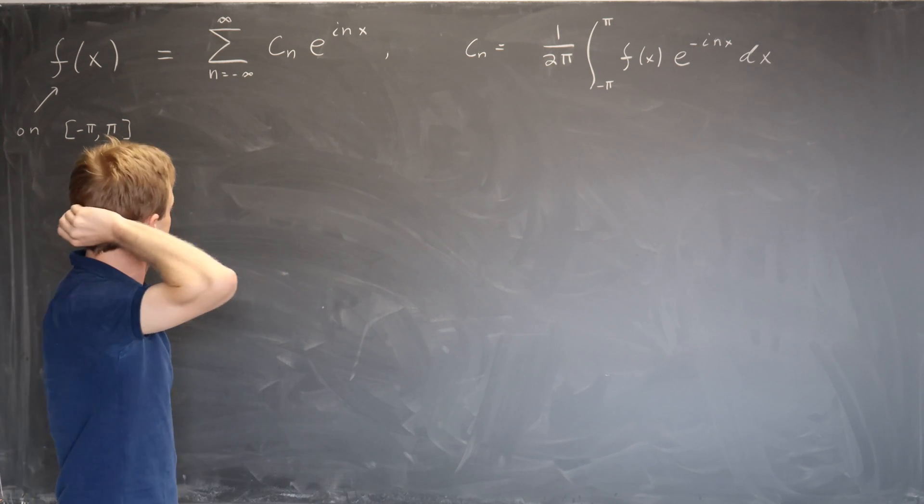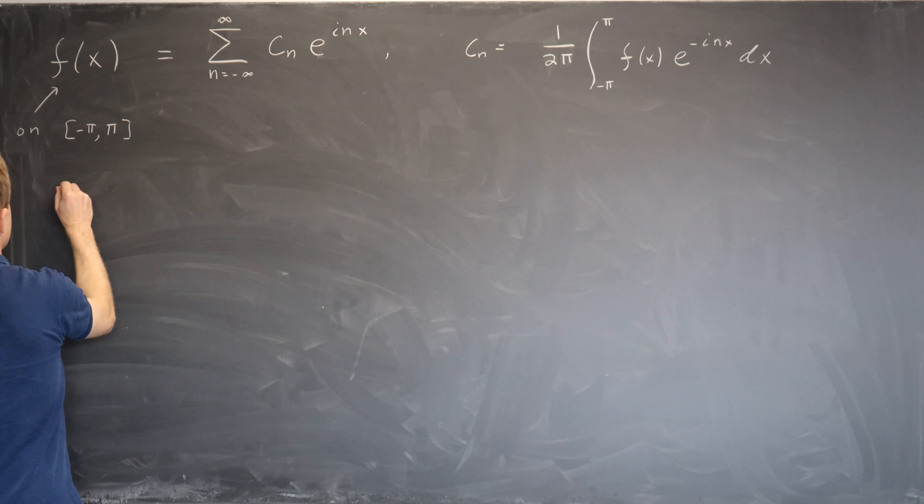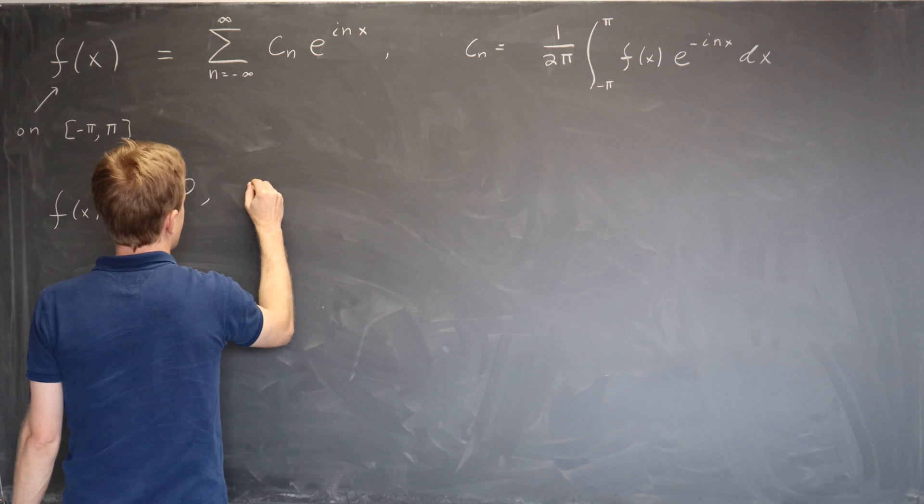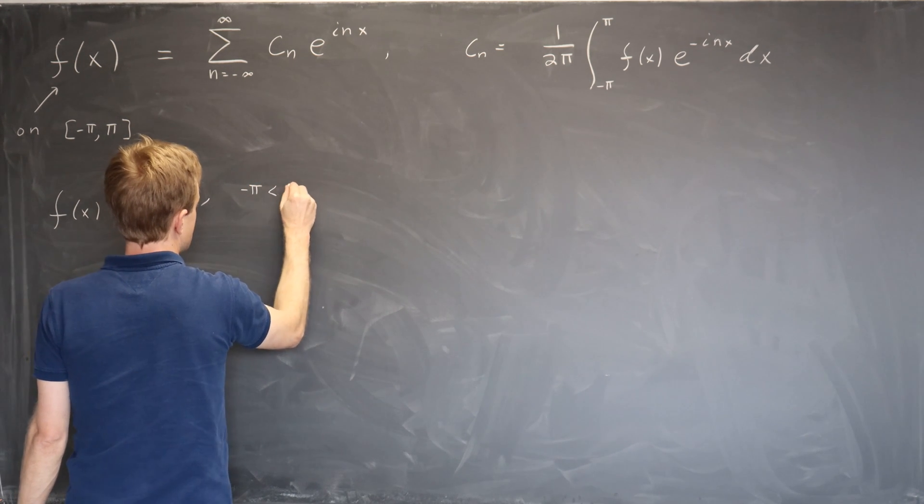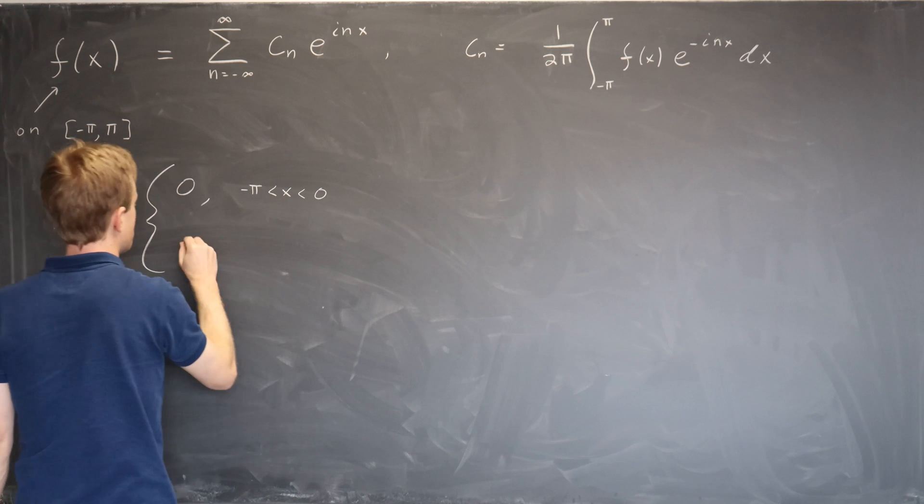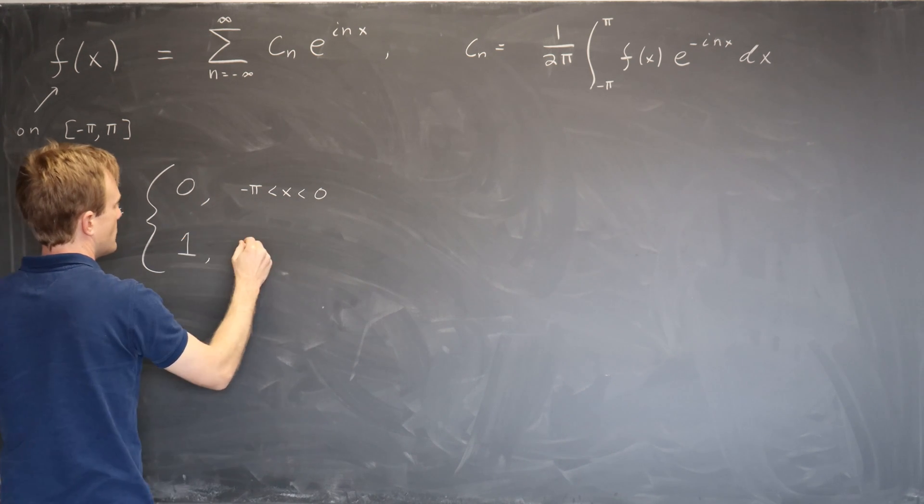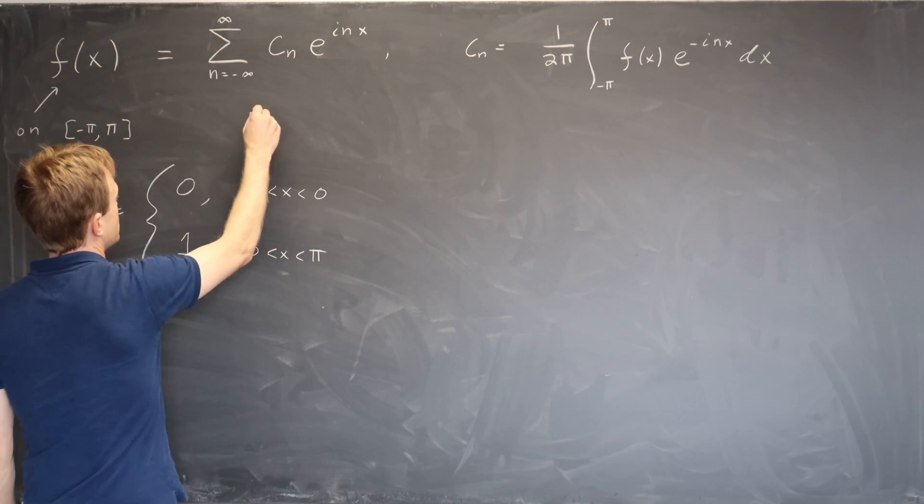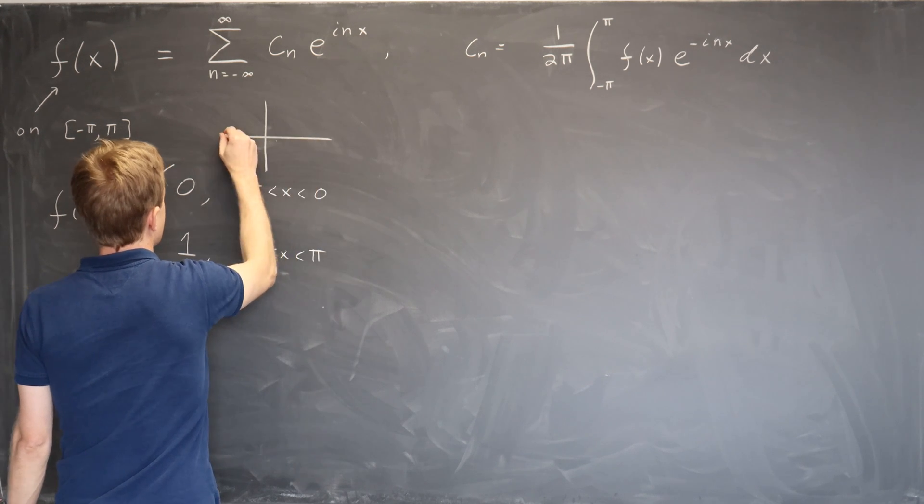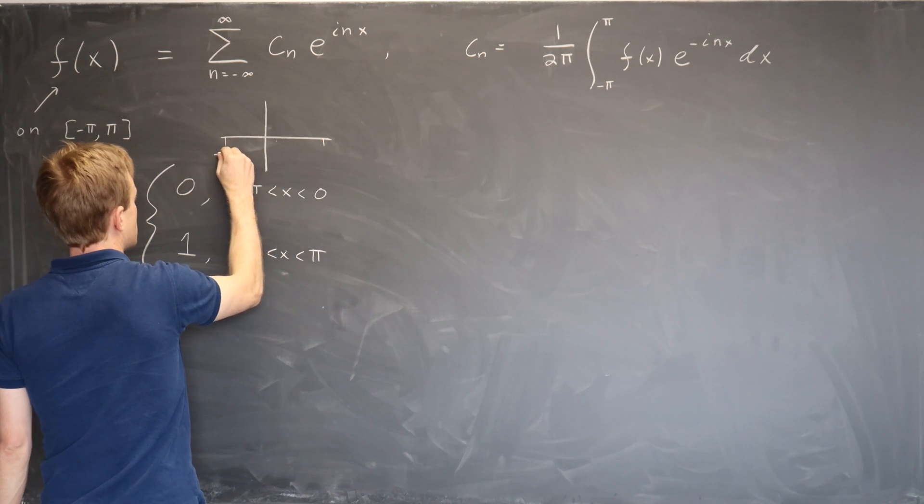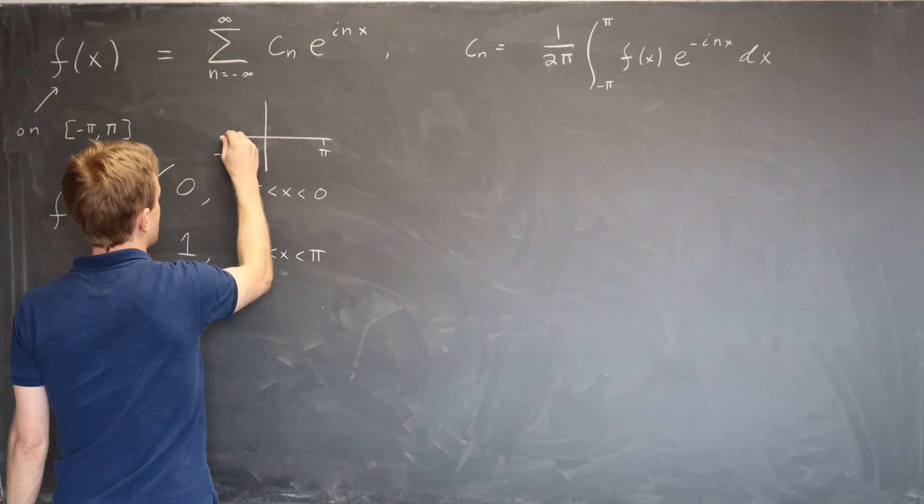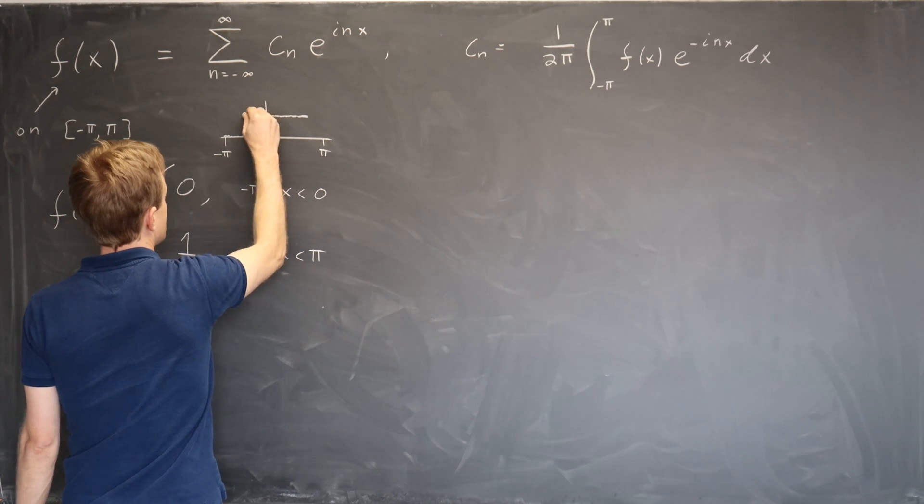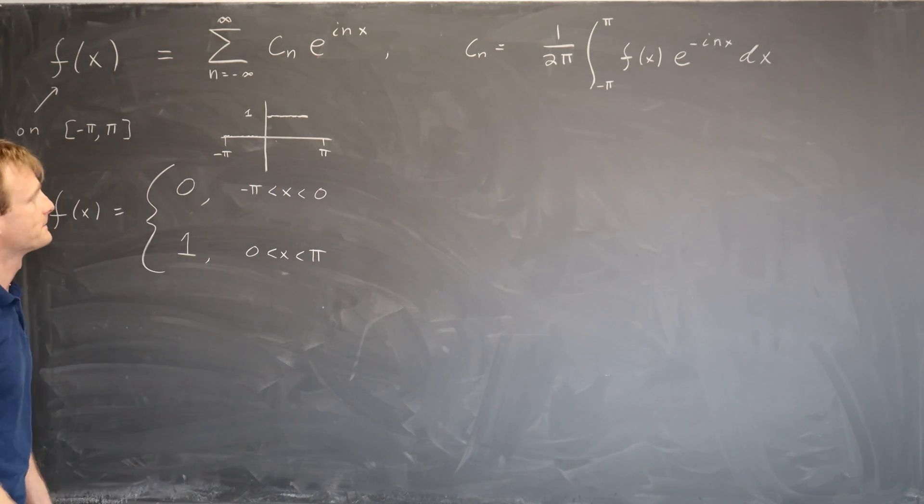The example I gave you was a step function, so we considered f(x) equals the function that is 0 when x is between minus pi and 0, and 1 when x is between 0 and pi. Here's the picture of it: there's minus pi, there's pi, it's 0 here and it's 1 here, and it has a discontinuity at 0.